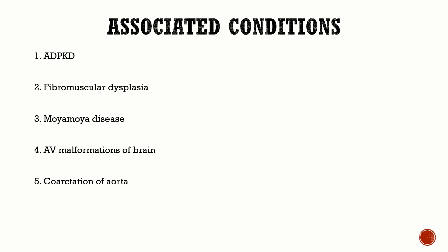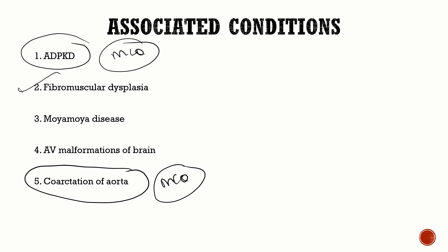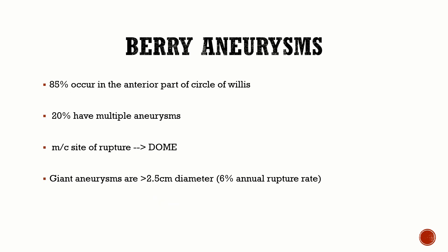Associated conditions with berry aneurysms: two things you should not forget — autosomal dominant polycystic kidney disease (ADPKD) and coarctation of the aorta. Don't forget these two; they are commonly associated with berry aneurysms. Others include fibromuscular dysplasia, Moyamoya disease, and AV malformations of the brain.